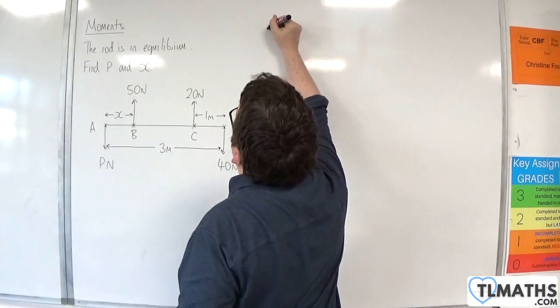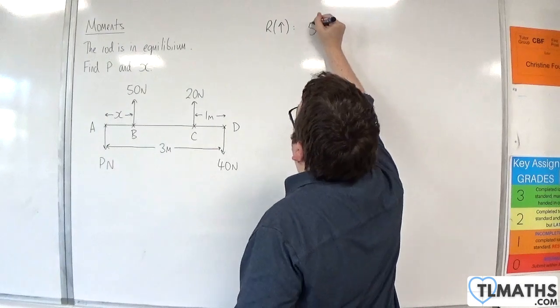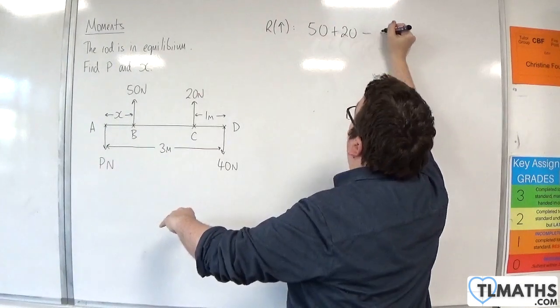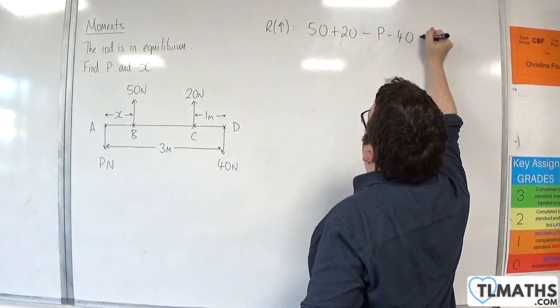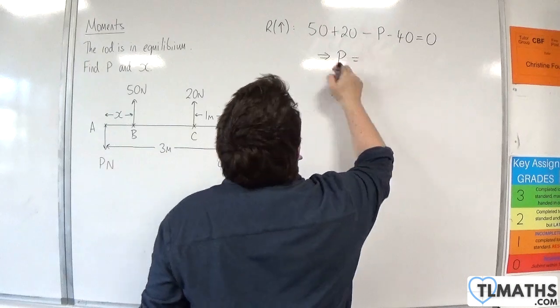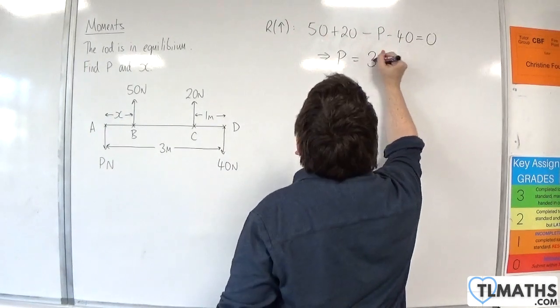I'm going to resolve first. Taking upwards as positive as I usually do, we've got 50 plus 20. The two forces are going upwards, take away P, take away 40 equals 0. So we have 70 take away 40 which is 30. So P has to be 30.